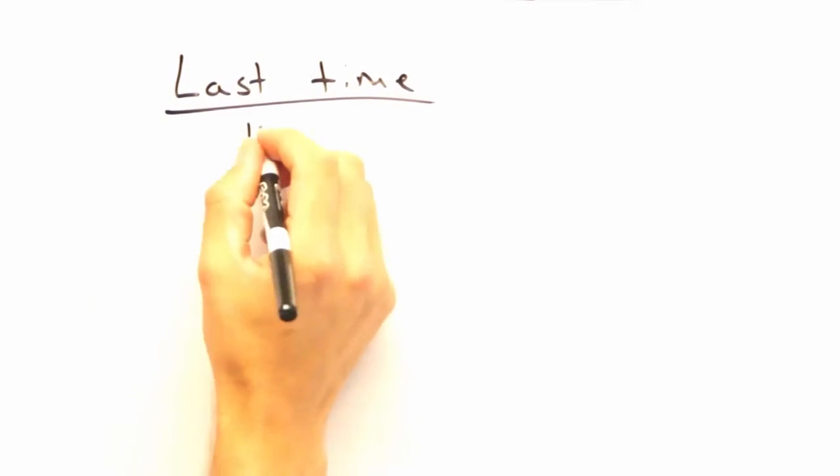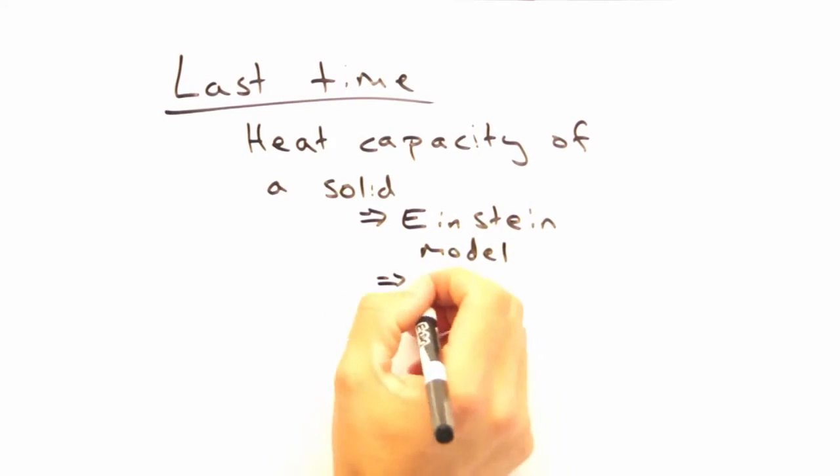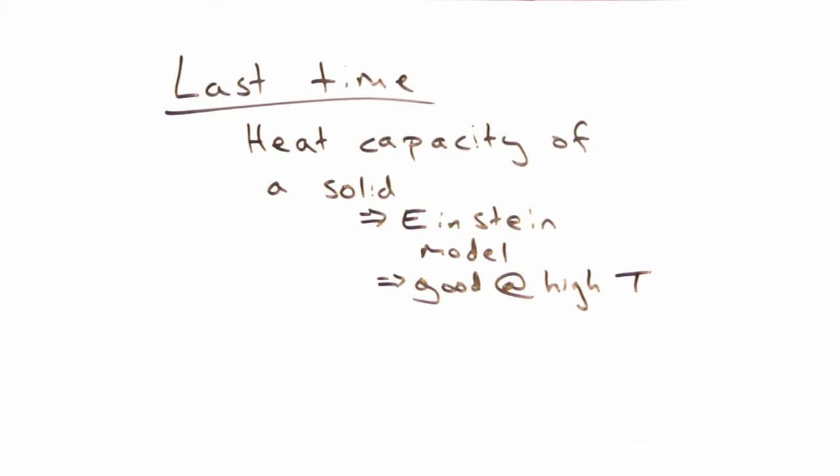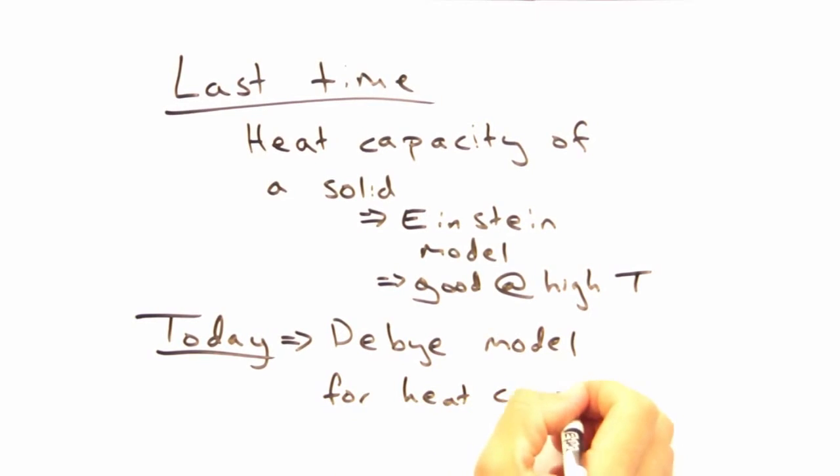Last time we wanted to determine the heat capacity of a solid. To do this, we started with the Einstein model. The resulting heat capacity worked really well for high temperature, but not so much for the low temperature limit. So with that in mind, our goal today will be to step it up one notch and use the Debye model for heat capacity.